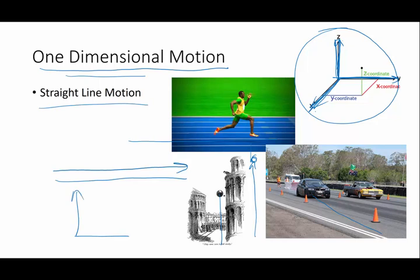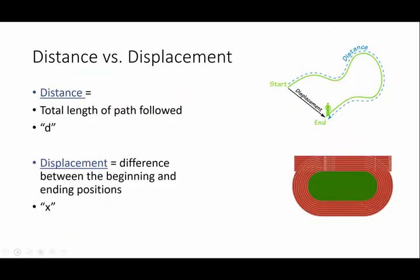And then later, in subsequent lessons and chapters, we're going to talk about two-dimensional motion. Objects that are moving through space while they're going, for example, like up and down. But that's later. So we're going to start out with one-dimensional motion, or one-dimensional kinematics.